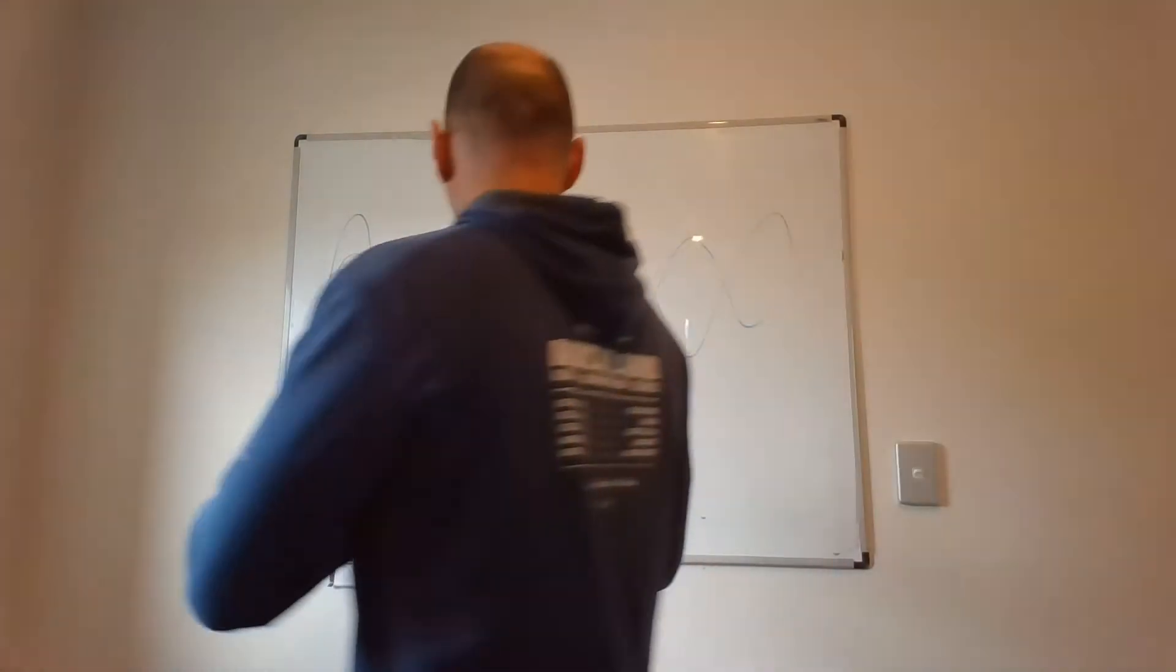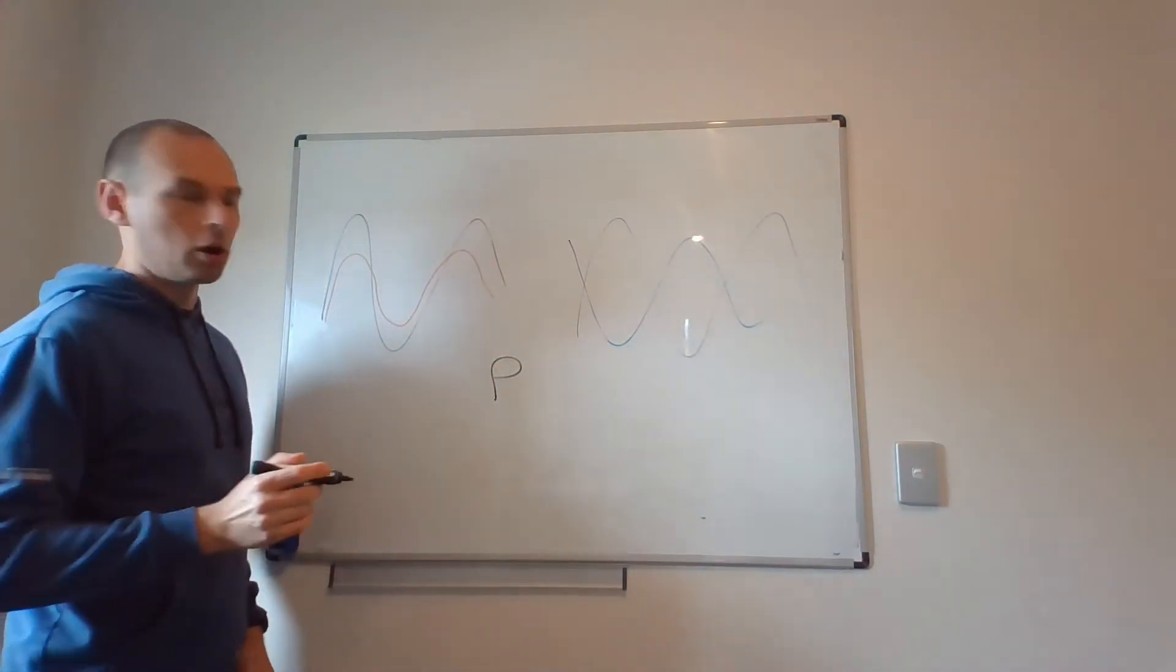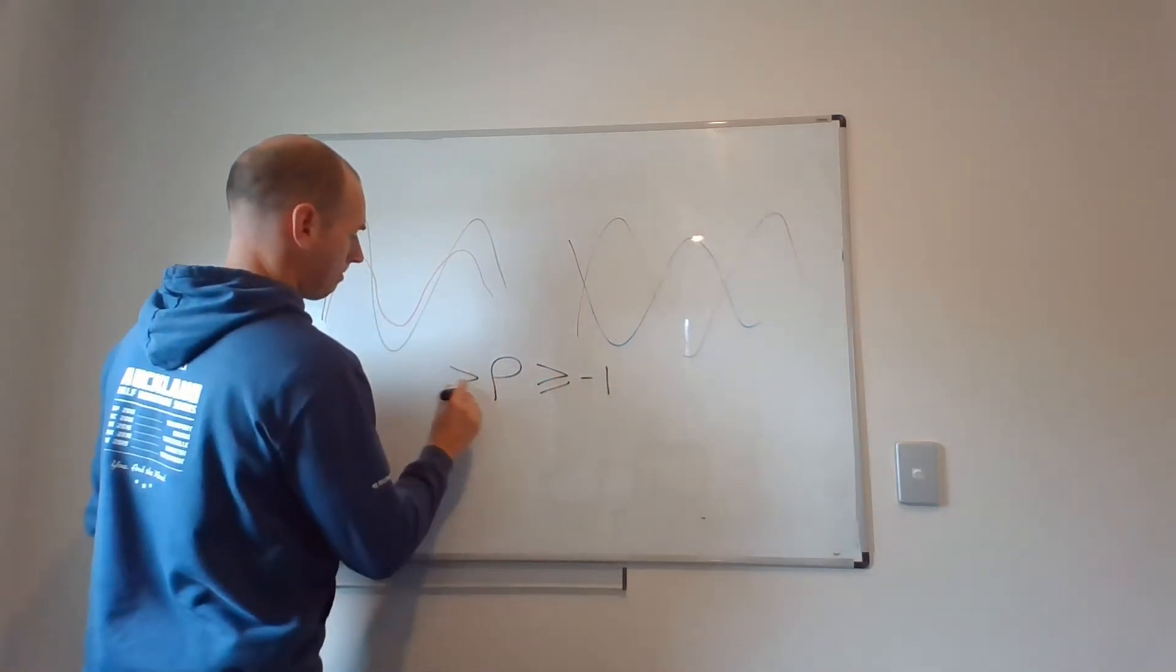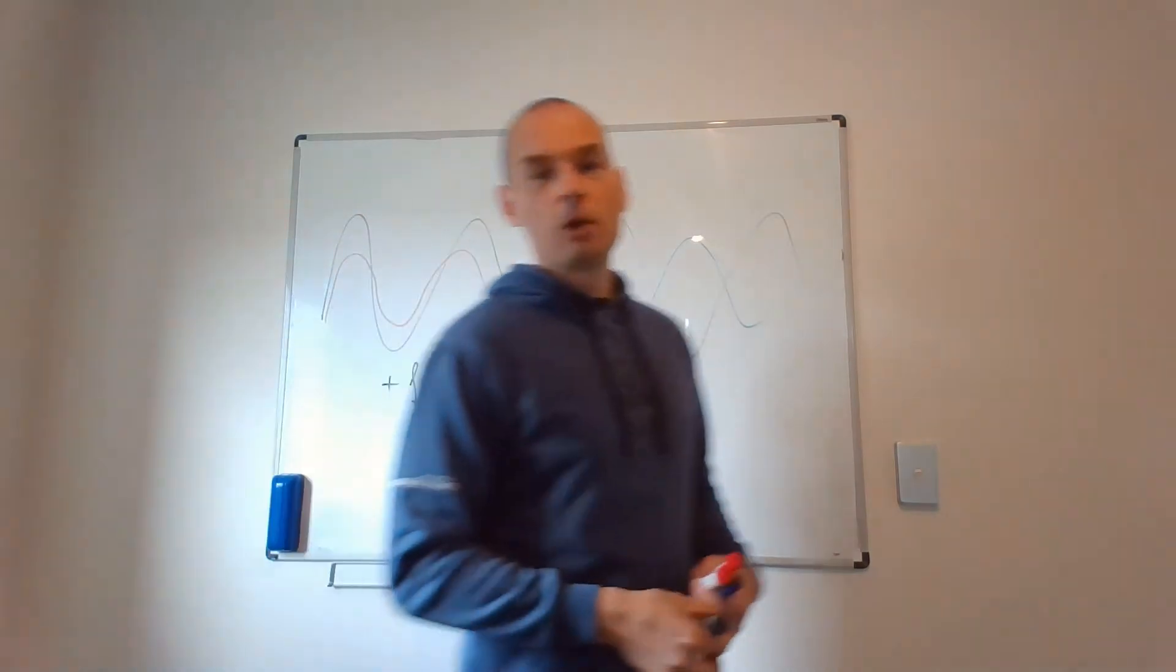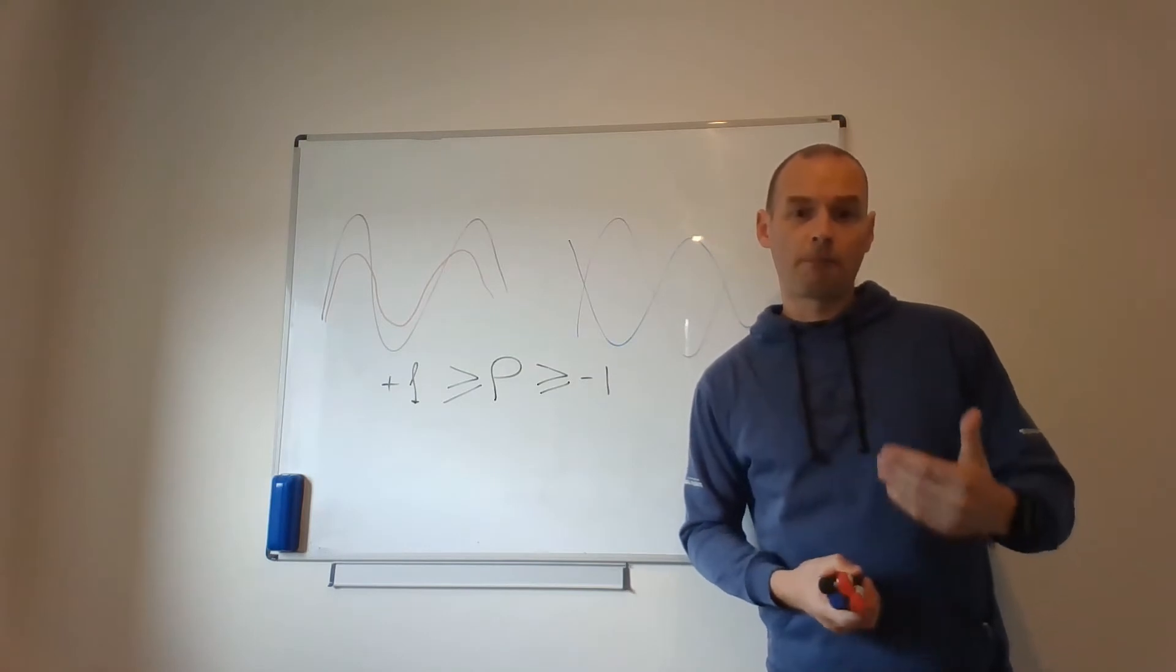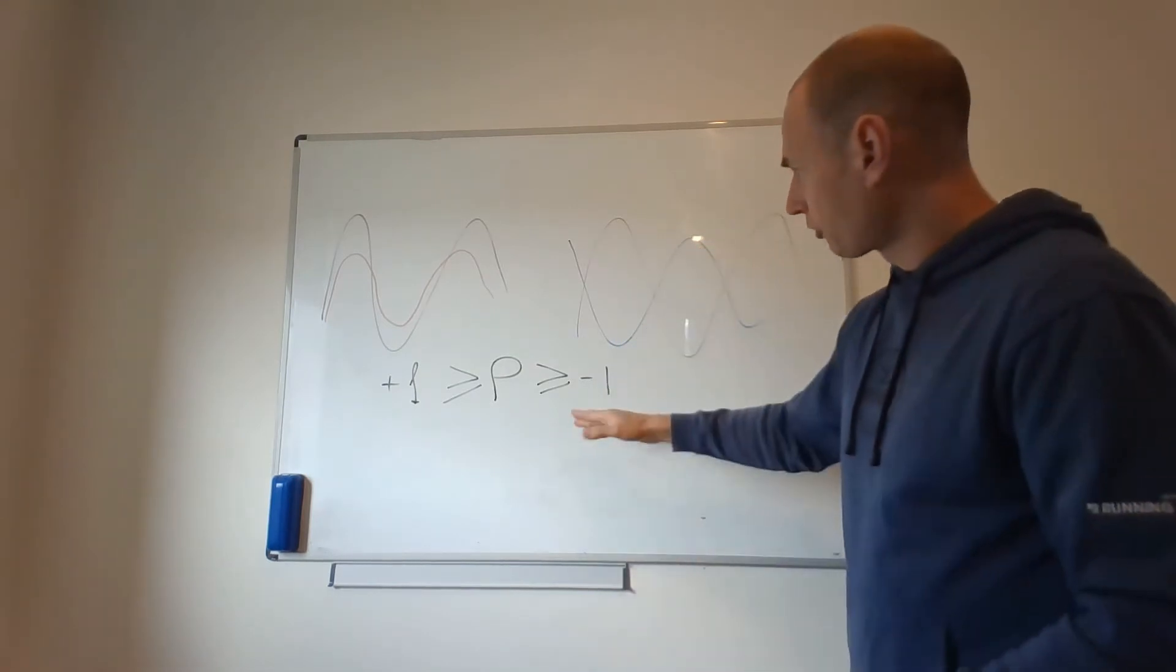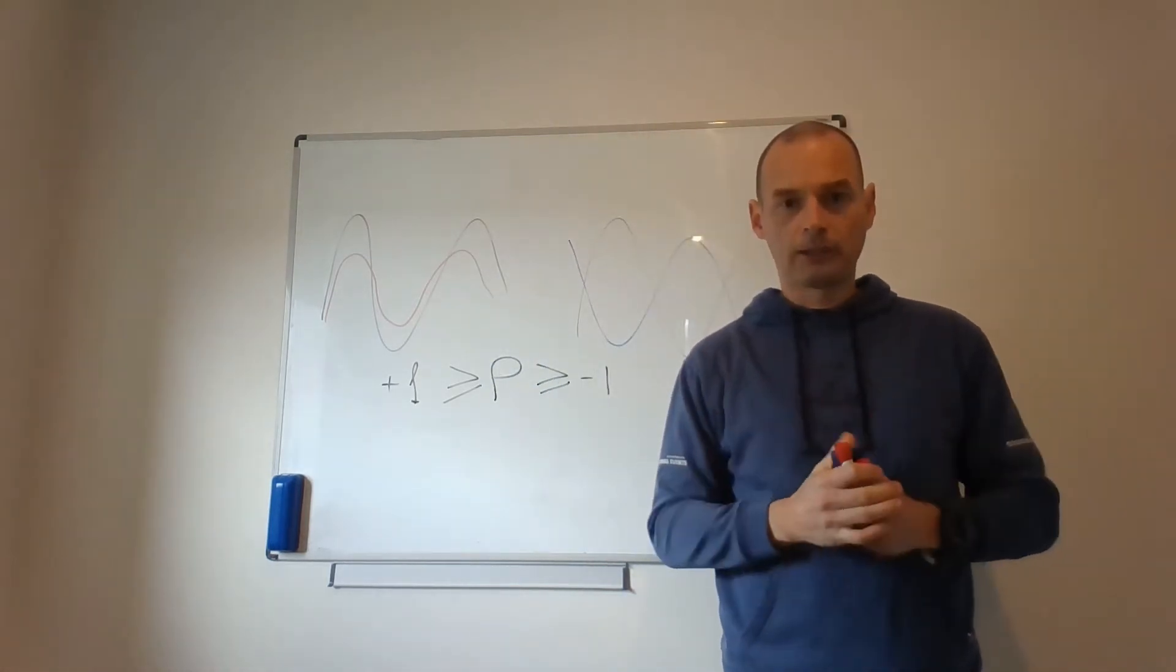So the coefficient of correlation, which is the Greek letter rho, takes on the range between plus one and minus one. So in case of plus one, we have a perfectly positive correlation. So everything moves perfectly together. In case of minus one, everything moves perfectly in the opposite direction.